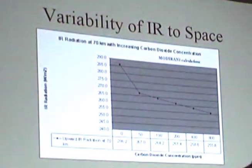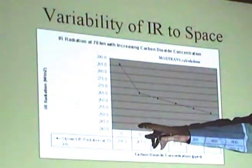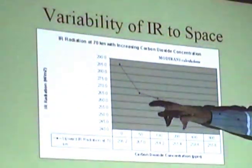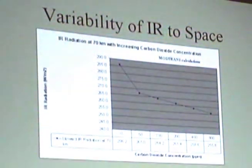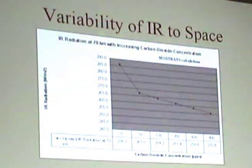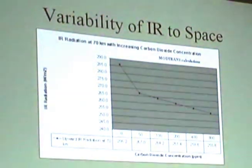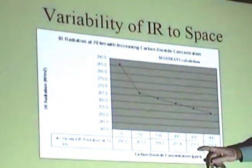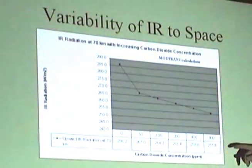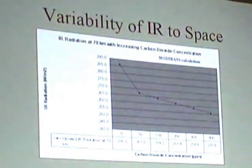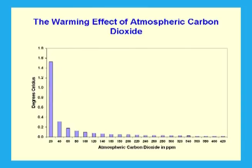If we have no carbon dioxide in the atmosphere, the total emission to space is around about 286 watts per square metre. We put in 50 parts per million and it's 267 — we've dropped about 20 watts per square metre. So doubling from 400 to 800 parts per million, we only reduce the outgoing radiation by about 3 watts per square metre. There is a logarithmic relationship between carbon dioxide and the change in emission.